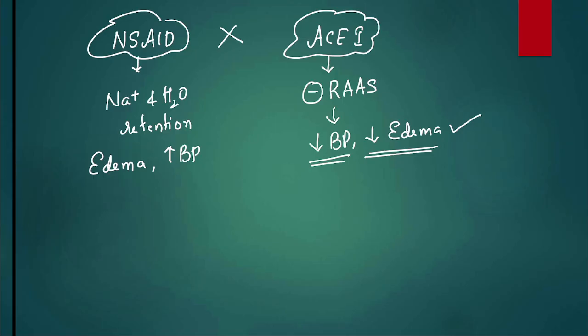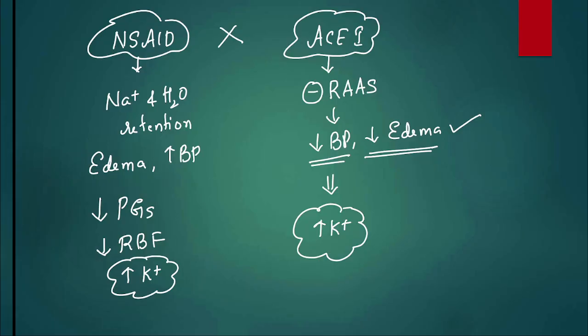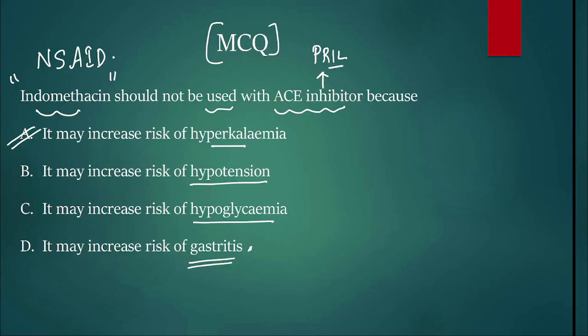Second, NSAIDs decrease prostaglandin synthesis - they block COX enzyme and decrease prostaglandin. If you decrease prostaglandin, there's a decrease in renal blood flow, and if renal blood flow is reduced, potassium cannot be excreted out, so they increase potassium levels. ACE inhibitors also increase potassium because when you decrease aldosterone synthesis, potassium level goes up. The problem of giving NSAID and ACE inhibitor is there's a risk of hyperkalemia.